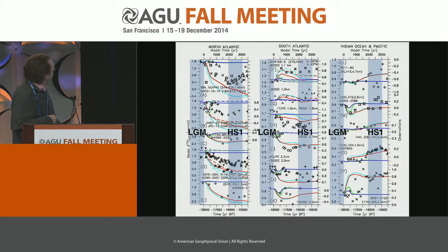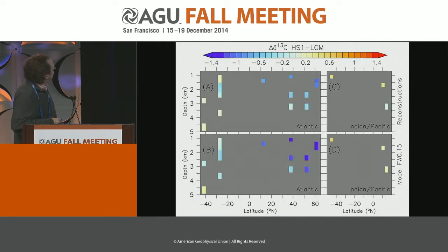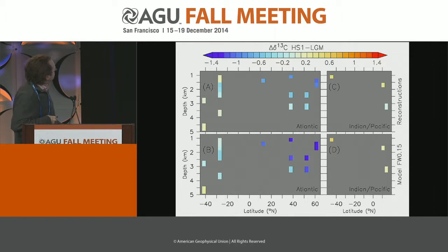I'm showing differences between Heinrich Stadial 1 and the LGM. The top panel is the reconstructions from high-resolution records. Blue indicates decreases in δ13C, red and yellow indicate increases. In the reconstructions, you can see larger decreases in the North Atlantic, particularly large at intermediate depth, with amplitude decreasing further south and deeper in the water column, and some increases at intermediate depth in the Indian and Pacific Oceans and the South Atlantic. Here is the model sampled at the observation locations — a very similar pattern, though the model overestimates the amplitude in the North Atlantic.